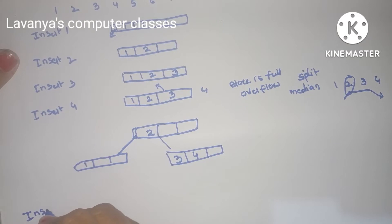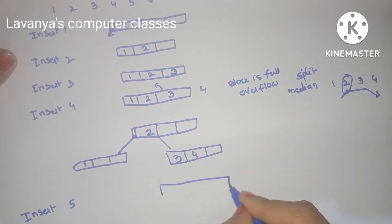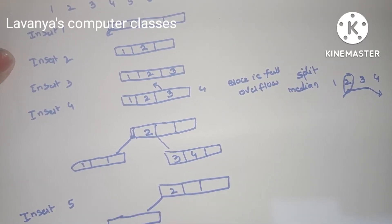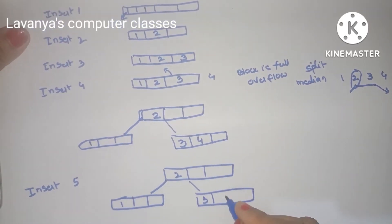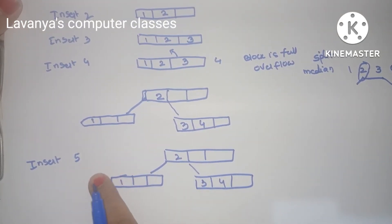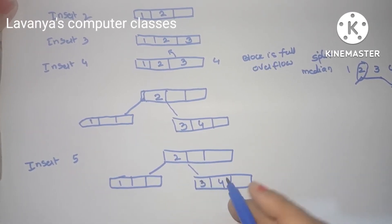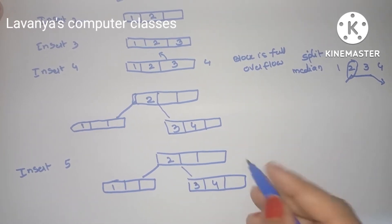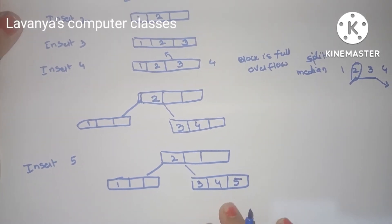Insert 5. The current tree has root node 2. On the left is 1, and on the right is a node with 3 and 4. The new element 5 is more than the root node 2, so go to the right-hand side. The right-hand side node has two places filled and one empty, so without any problem, insert 5 there.